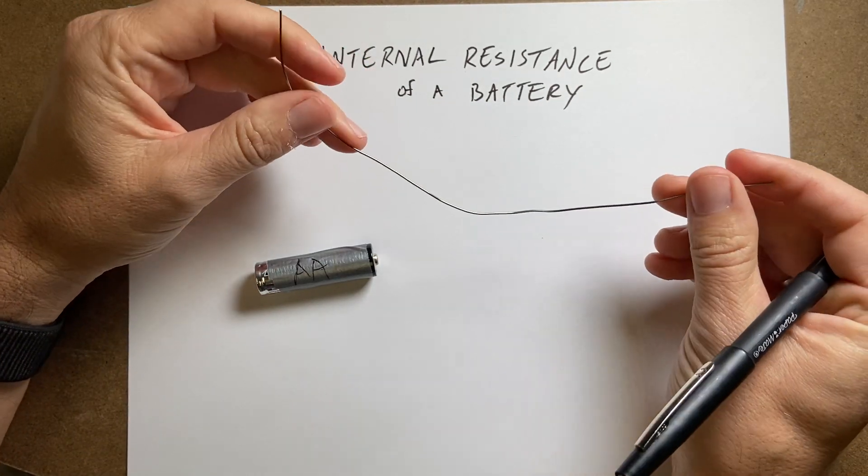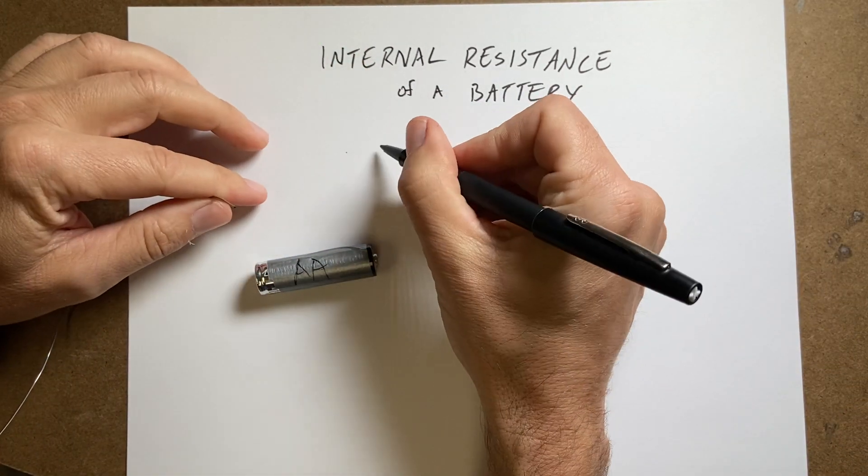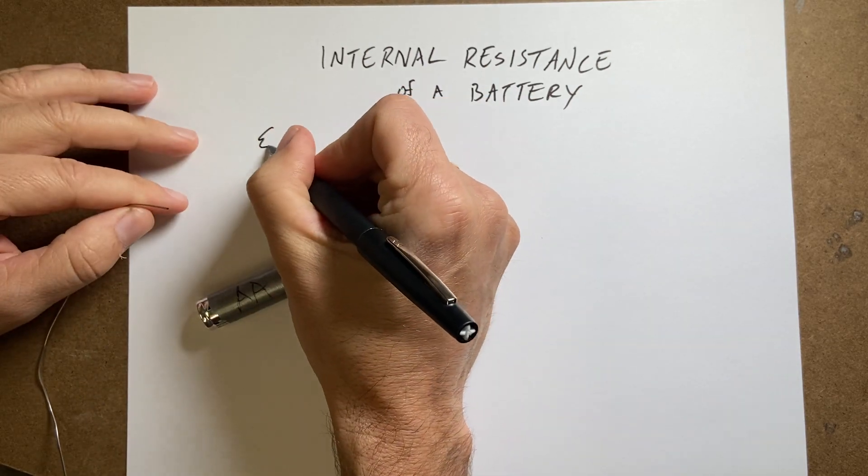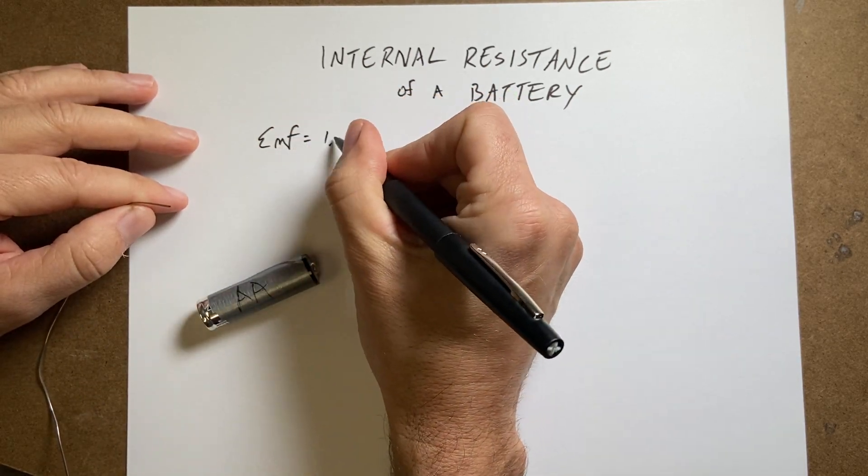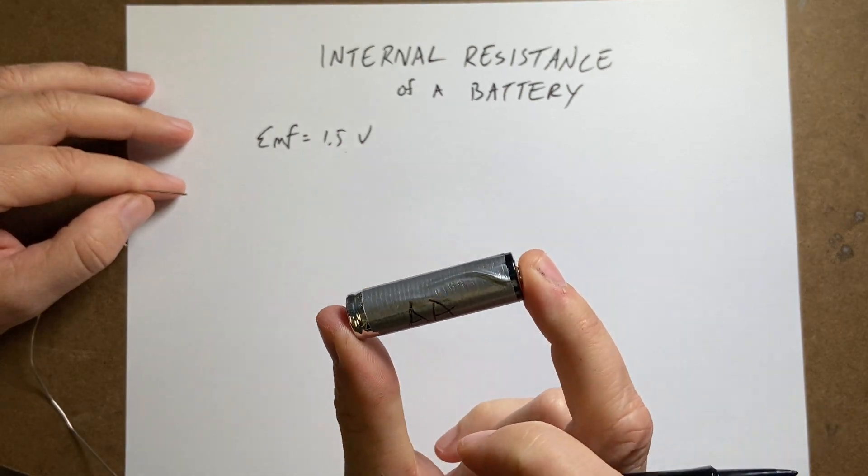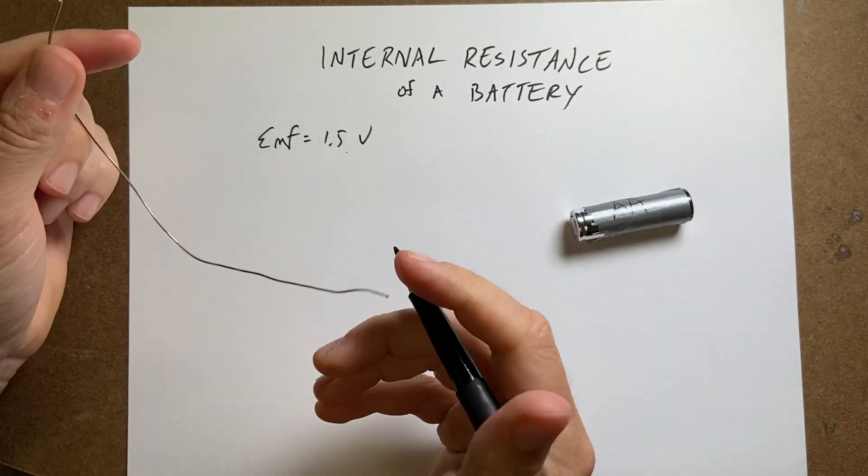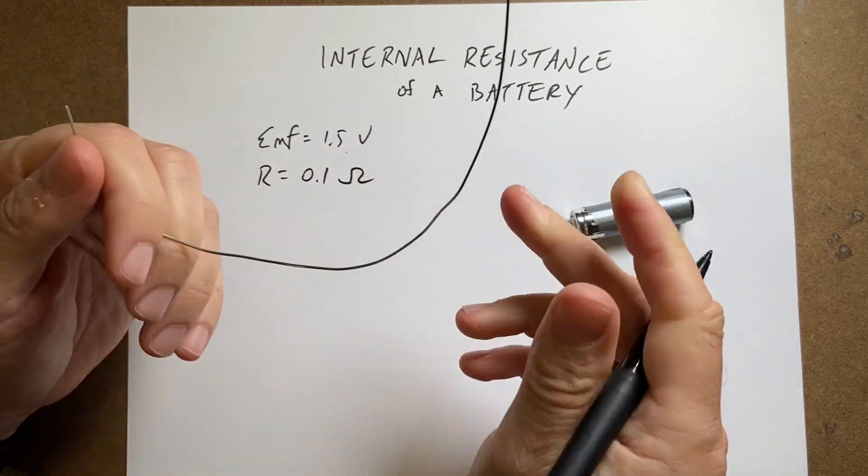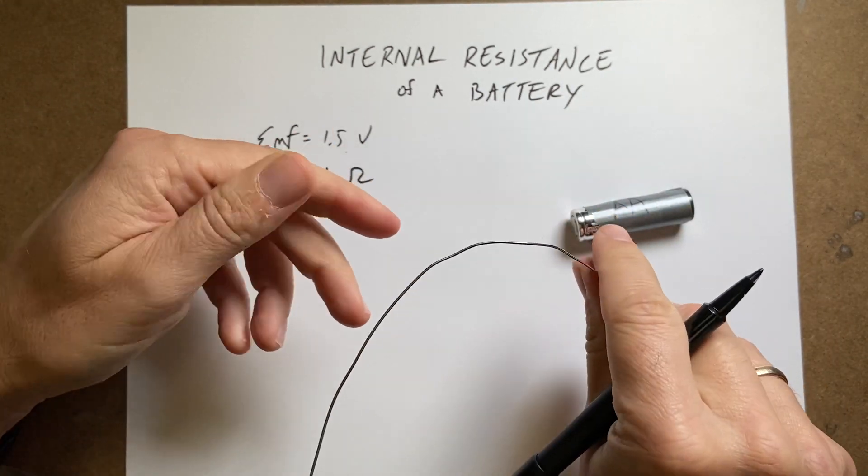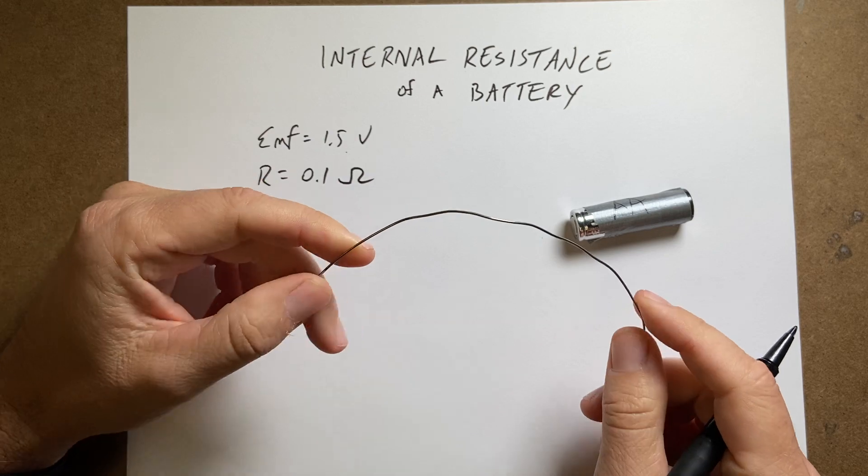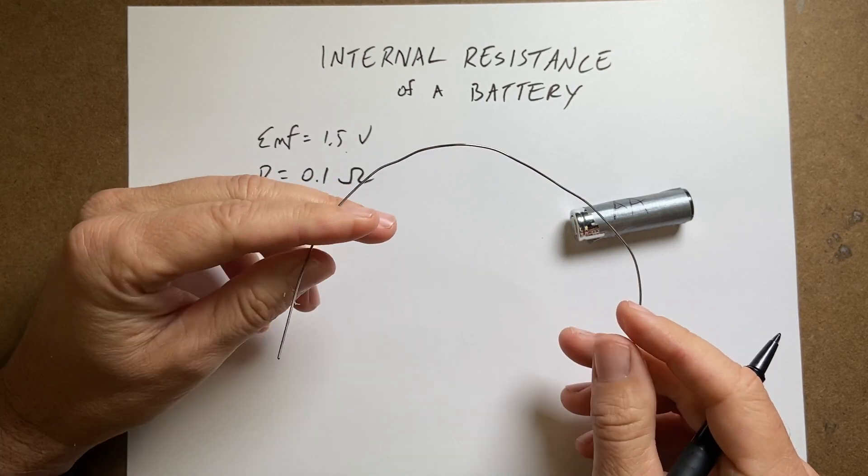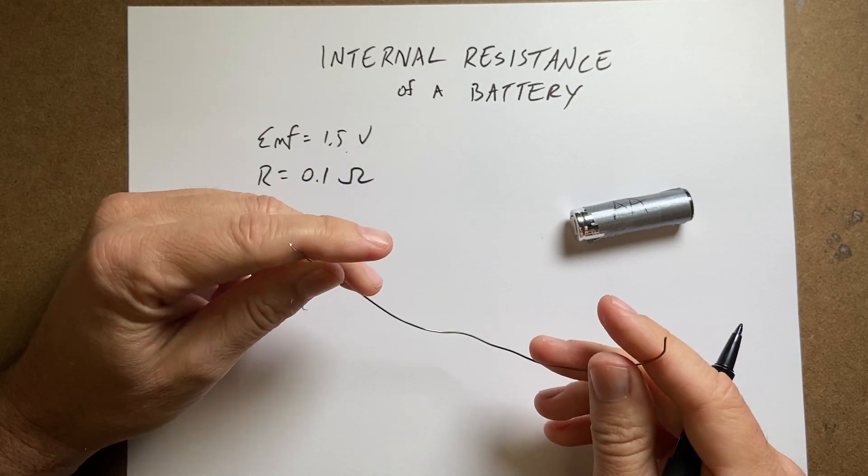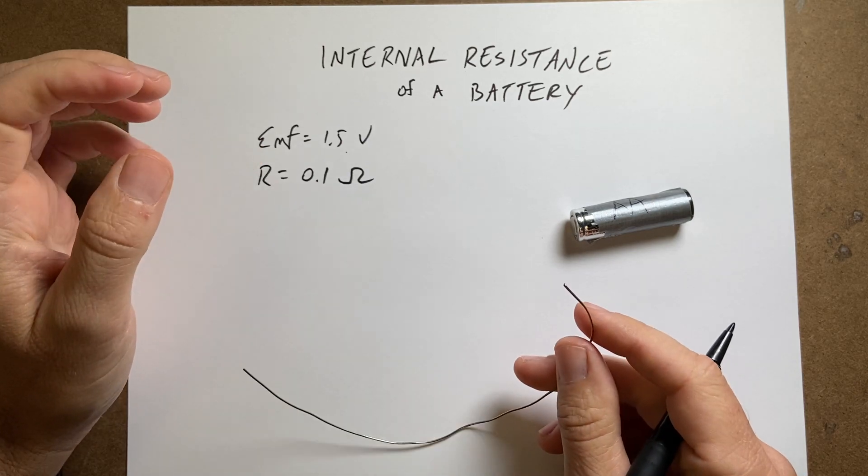Let's just say that this has a resistance. So let's say we have EMF of 1.5 volts. That's what these AA batteries are. And then this wire, let's say, has a resistance of 0.1 ohms. I'm not sure exactly what it is. It's not nichrome, but it's not copper either. So it does have a higher resistance than a normal copper wire. Let's just say it's 0.1 just for now.